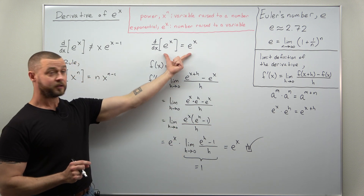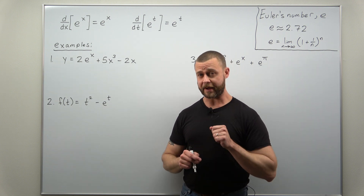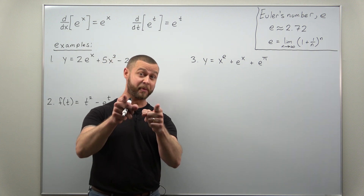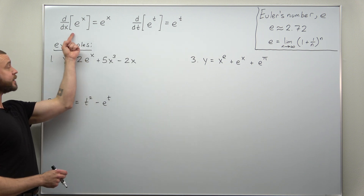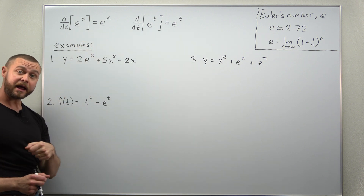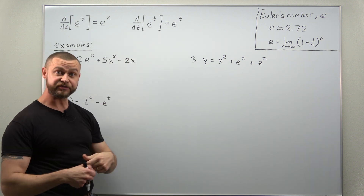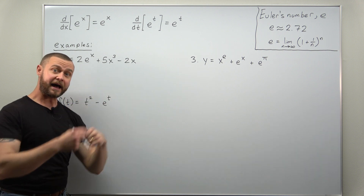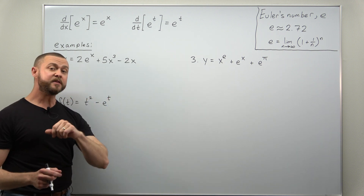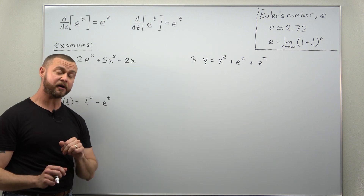Now with that out of the way, let's get to some examples. We'll look at three examples — example three is a personal favorite. We need to be comfortable with the basic rule: the derivative of e to the x is e to the x. Also be comfortable writing it with a different variable, like t: the derivative of e to the t is e to the t. Just change the variable and the exponential function still differentiates to itself.